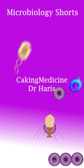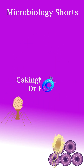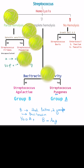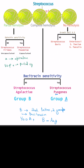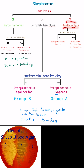In microbiology shots we have Streptococcus classification. Classification is based on hemolysis, that is red blood cell destruction. First is alpha hemolysis or partial hemolysis, then we have beta or complete hemolysis, then we have gamma, that is no hemolysis.